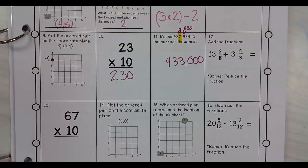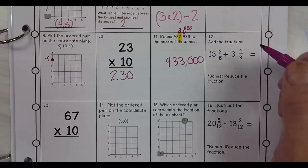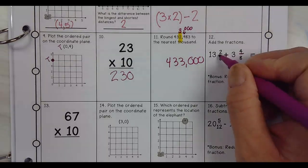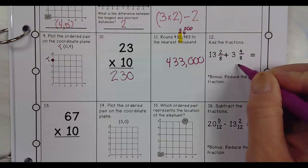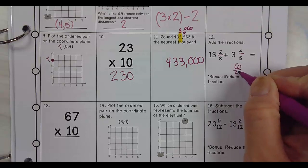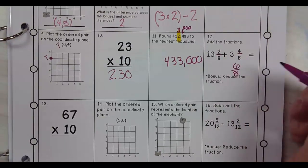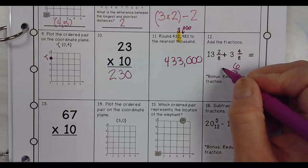Add the fractions. Okay. So you said 4 plus 2 is 6. So it's 6 8ths. And then 13 plus 3 is... 16 and 6 8ths.